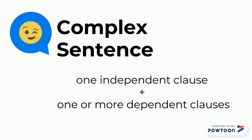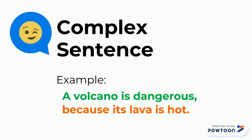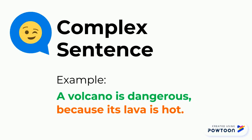A complex sentence is made up of one independent clause and one or more dependent clauses, and they are joined by a subordinating conjunction. For example, if we join the independent clause with a dependent clause, we can form this sentence: A volcano is dangerous, comma, because its lava is hot. When we place them together, we have a complete thought, even with details.